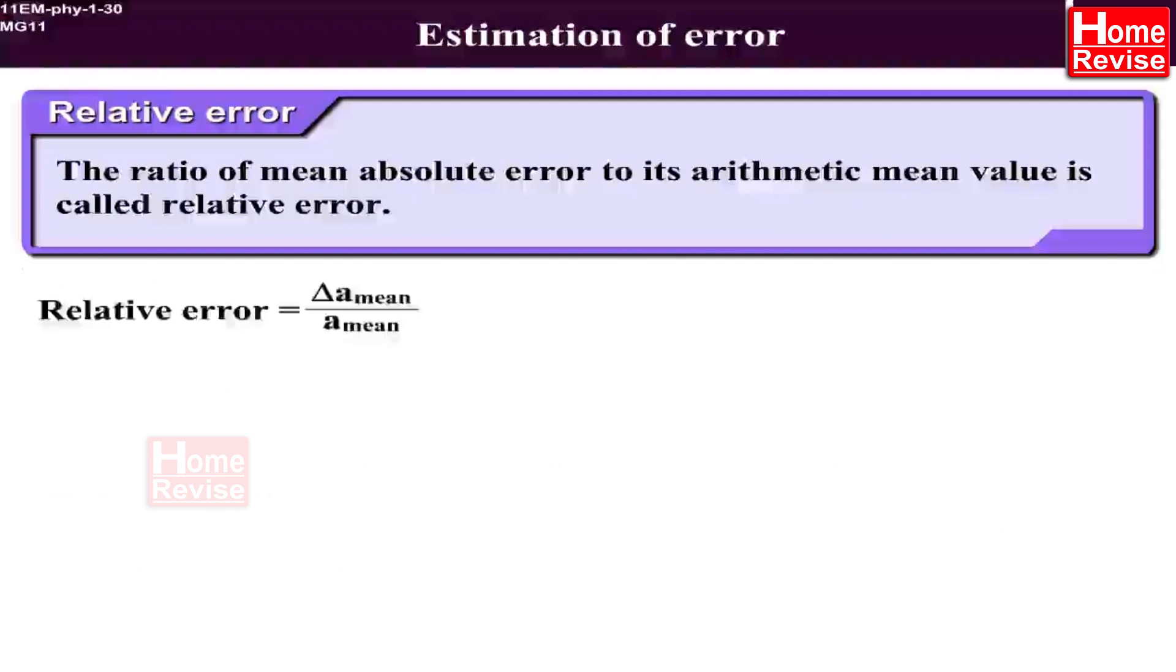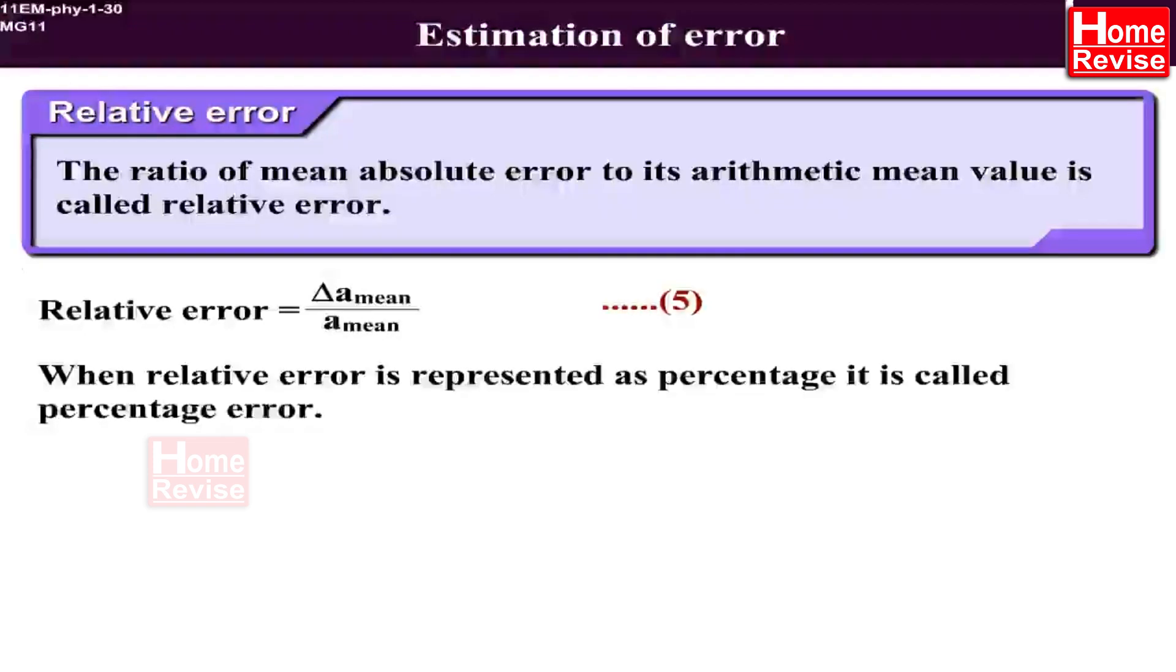Relative error is equal to ΔA_mean upon A_mean. Let this be equation 5. When relative error is represented as percentage it is called percentage error. Percentage error is equal to ΔA_mean upon A_mean into 100. Let this be equation 6.